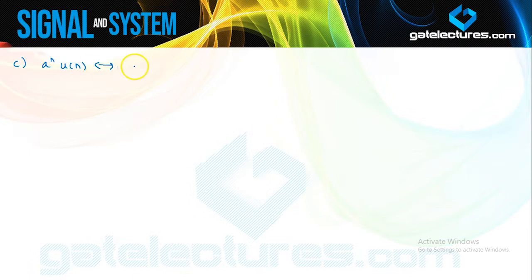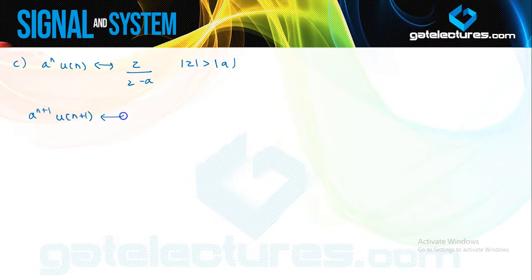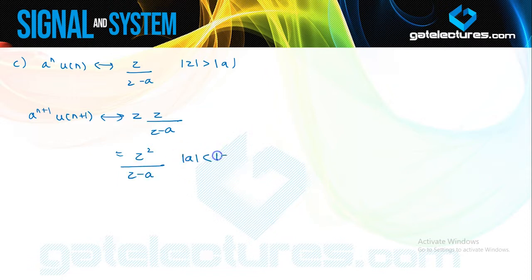For a^n·u(n), the Z-transform is z/(z−a) with ROC |z|>|a|. If you apply a time shift of +1, you get Z-transform z²/(z−a), with ROC |z|>|a| and |z|<∞. For time reversal, using the time reversal property on u(n) — which has Z-transform z/(z−1) — gives X(1/z) = (1/z)/(1/z−1) = 1/(1−z), with ROC |z|<1.